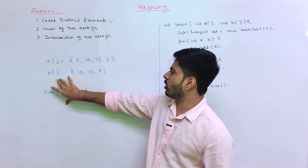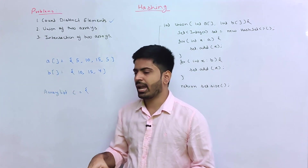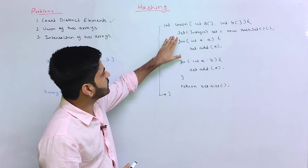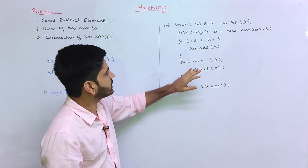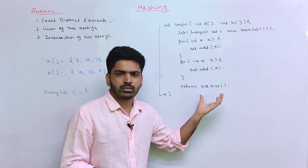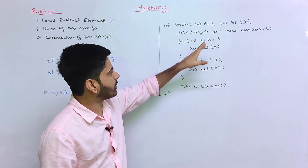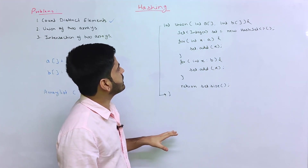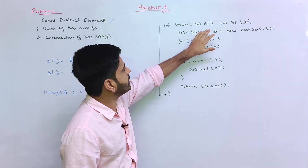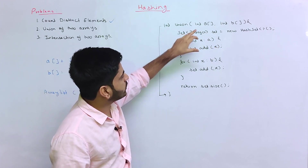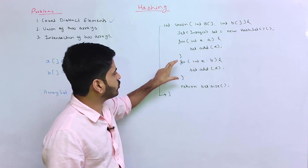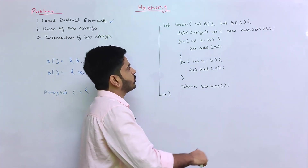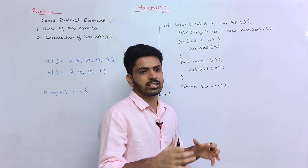The time complexity of this set-based union approach is O(n log n + m log m) if you sort, or O(n + m) using a HashSet, where n is the size of the first array and m is the size of the second. This is a better time complexity solution, though it uses O(n + m) space. The set holds distinct elements, so duplicates are automatically handled.